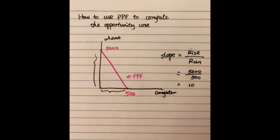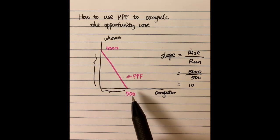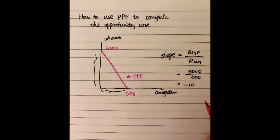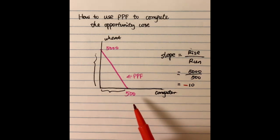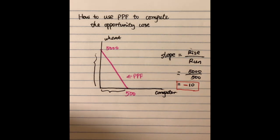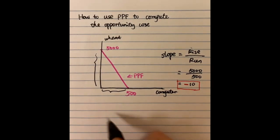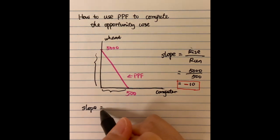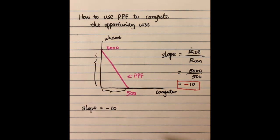However, you can also notice this is a downward-sloping PPF, so we need to add a negative sign. The slope of this PPF equals negative 10. How do we interpret this negative 10 in economics?